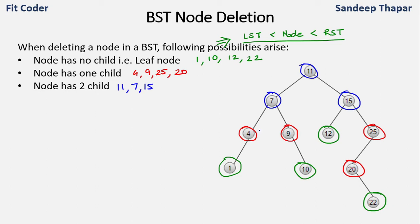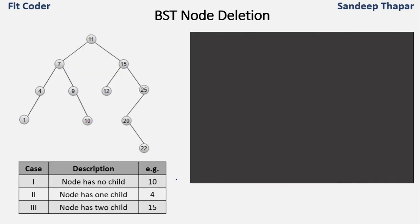The handling of deletion for each of these categories would be slightly different. We'll see one by one how we can cater to each category. These are the three cases: case one with no child, for example node 10; case two with one child, for example node 4; and case three with two children, for example node 15.